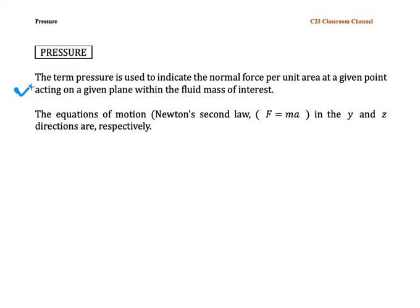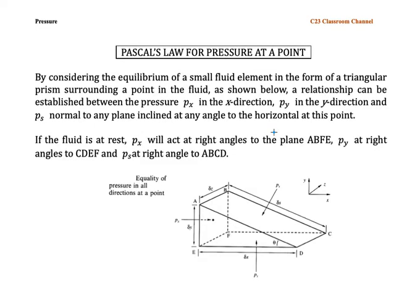The equation of motion, which is Newton's second law, F equals ma, in the y and z directions are respectively used in this calculation. I would like to introduce Pascal's law for pressure at a point. By considering the equilibrium of a small fluid element in the form of a triangular prism surrounding a point in the fluid, a relationship can be established between the pressure Px in the x direction, Py in the y direction, and Ps which is normal to any plane inclined at any angle to the horizontal at this point.